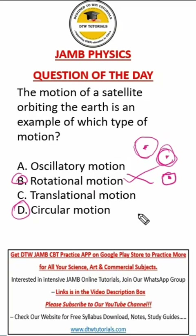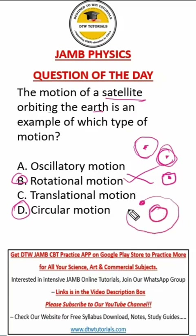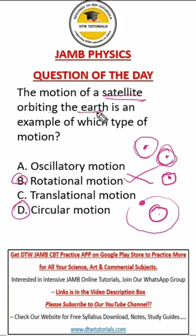Now, what is circular motion? Circular motion is when the body is outside. In this case, it says satellite orbiting the Earth. So this is the satellite and this is the Earth. It's moving around. You can see two bodies — the body is rotating outside another body. A body rotating outside another body — that is circular motion. So the satellite orbiting the Earth is an example of circular motion.